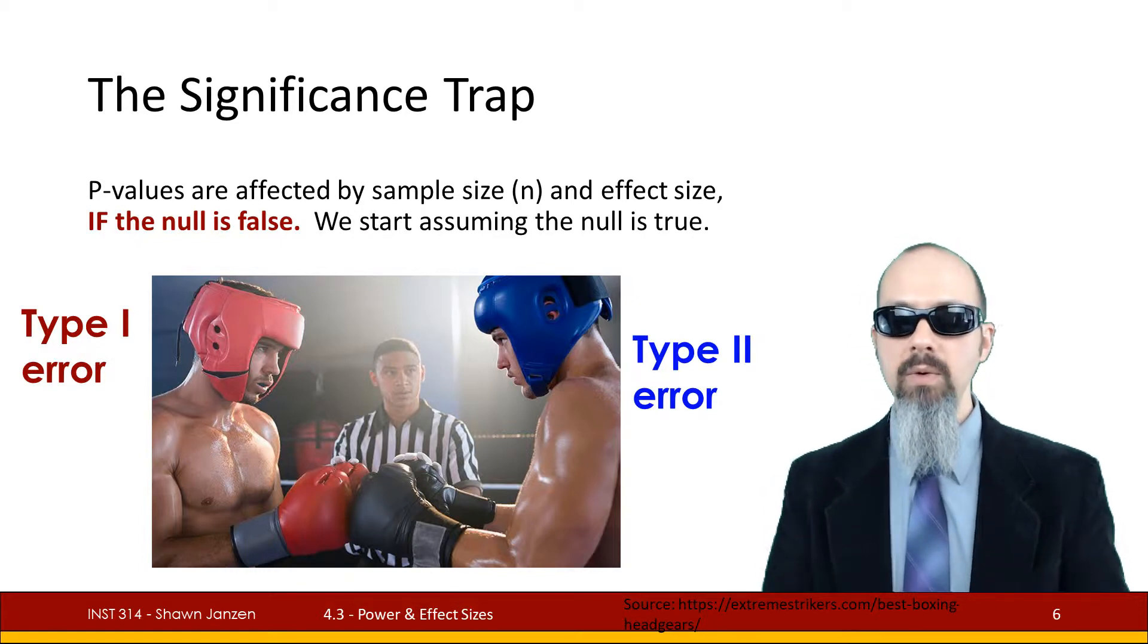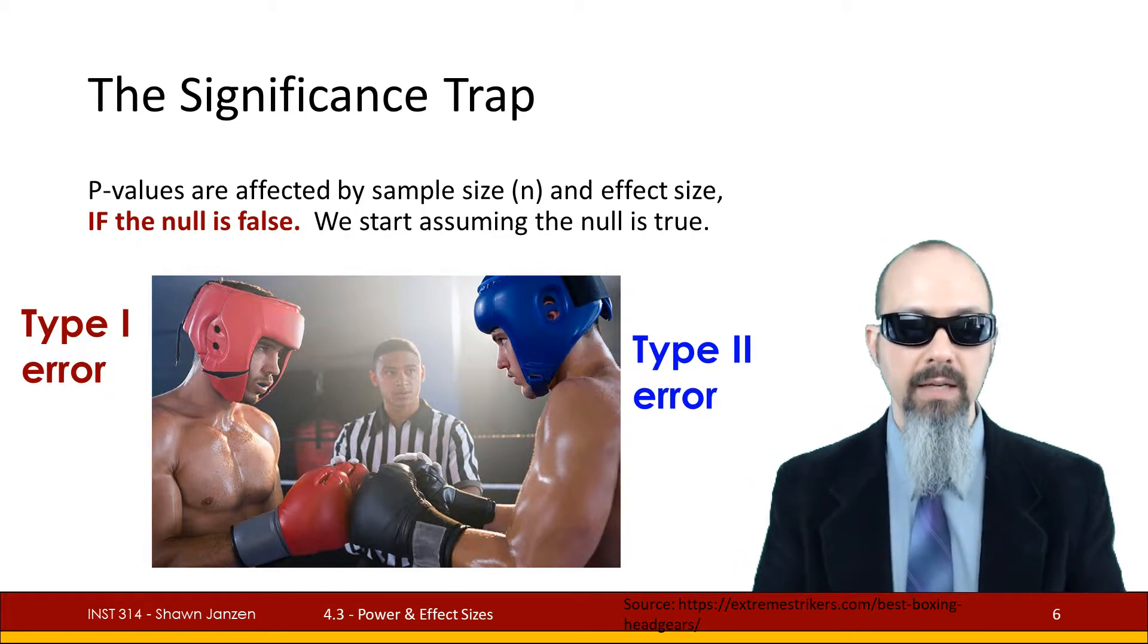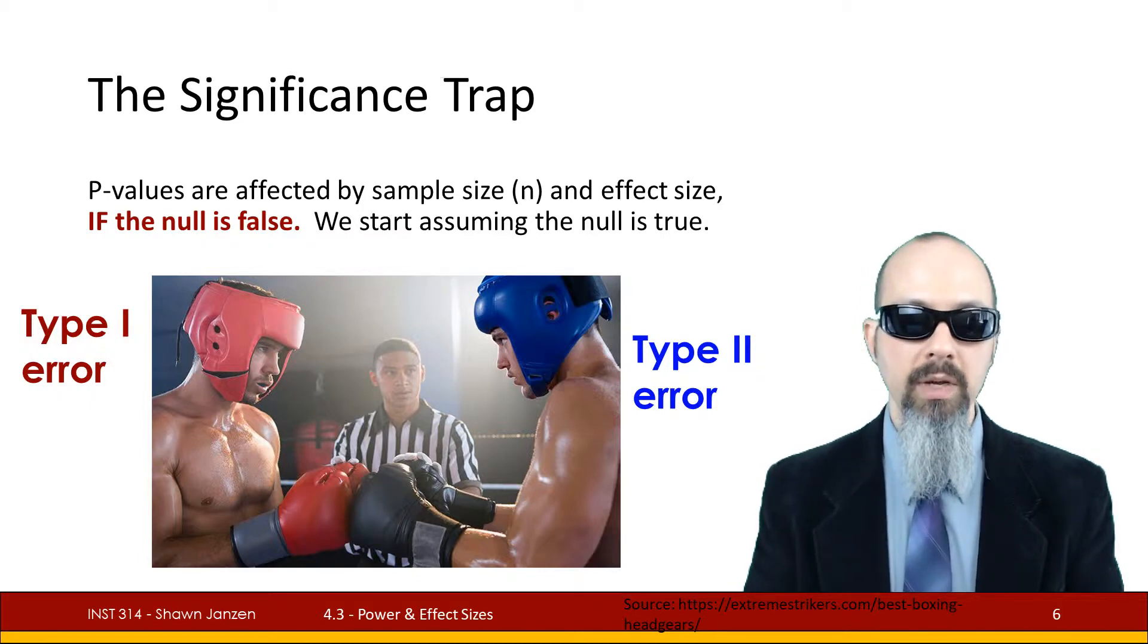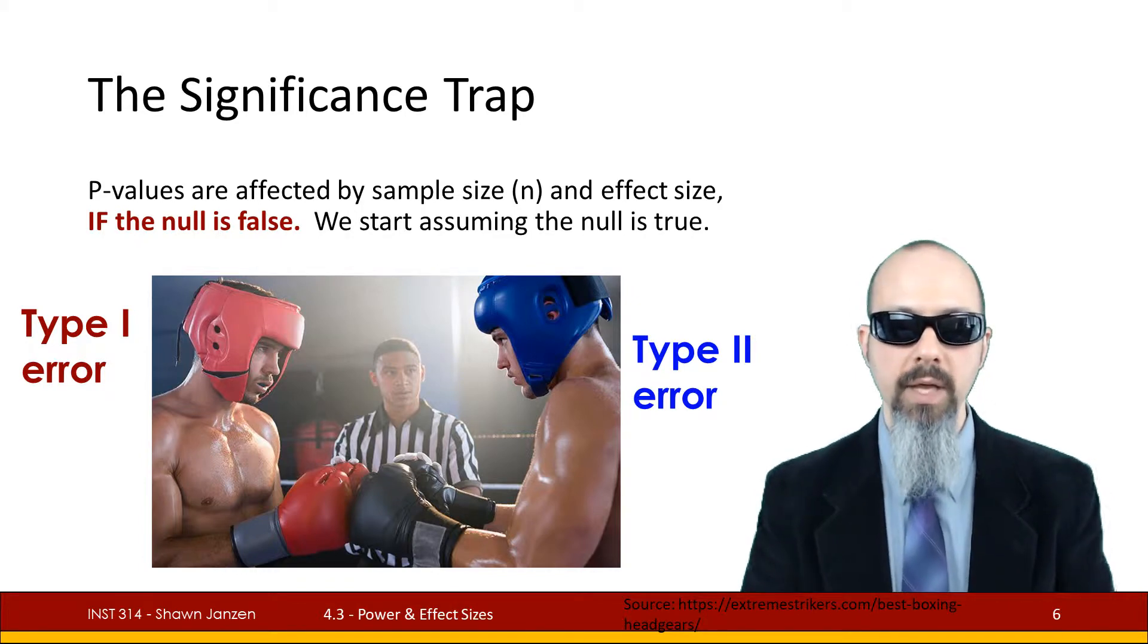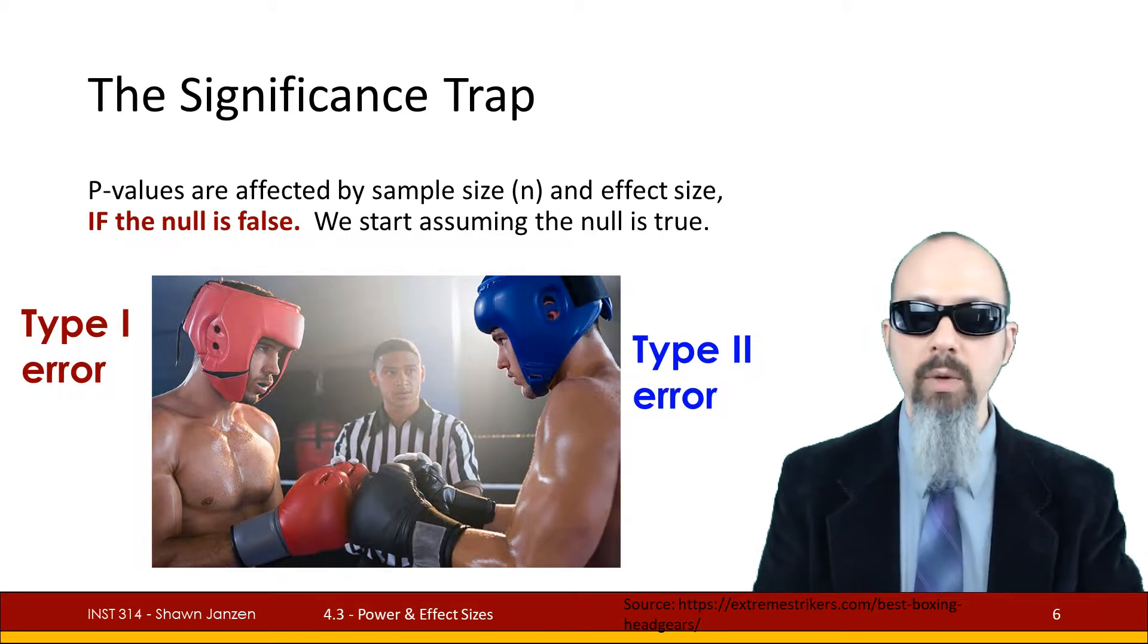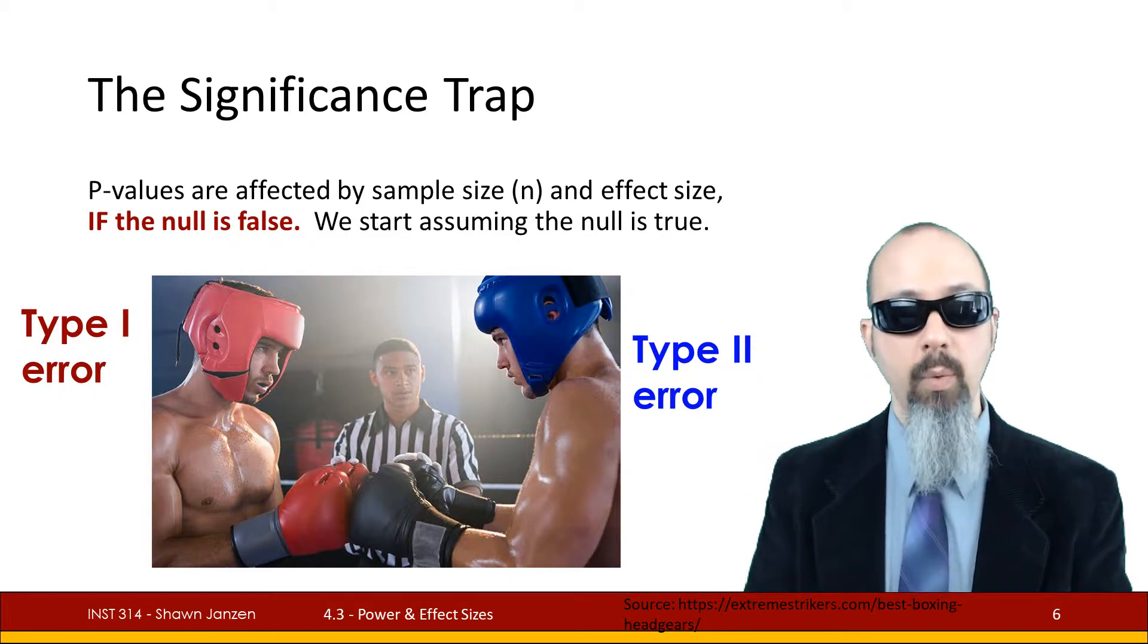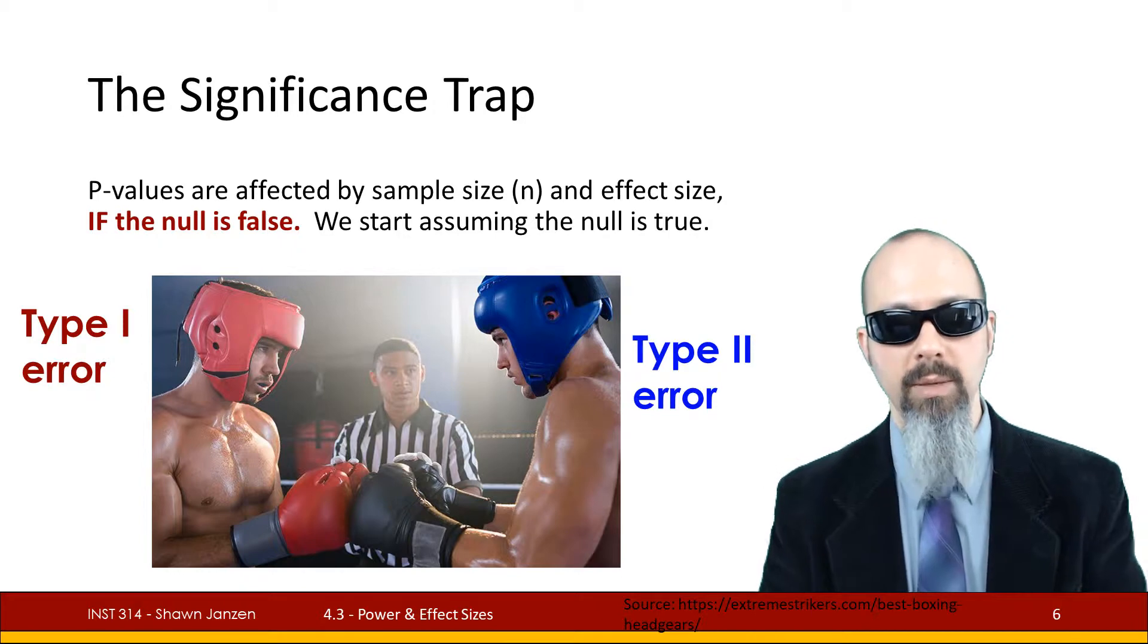What we're going to keep in mind is this concept of type 1 and type 2 errors and where your alpha comes into play. We start by saying the null distribution is true, that there's no difference, and we use alpha as a maximum level of risk to see if we're going to get a value so extreme that we can reject this null hypothesis. The larger your level of alpha, the greater the chance you're going to commit a type 1 error because you might reject the null hypothesis when you weren't supposed to.